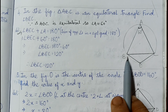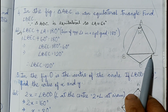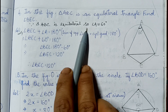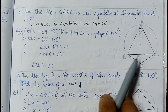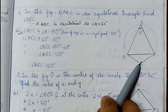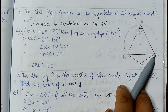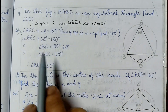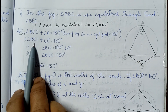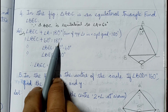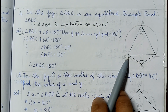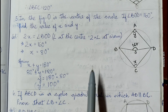Question number four: triangle ABC is an equilateral triangle; find the measure of angle BEC. Since triangle ABC is equilateral, each angle equals 60 degrees, so angle A equals 60 degrees. ABCE is a cyclic quadrilateral, and the sum of opposite angles is 180 degrees, so angle BEC plus angle A equals 180. BEC plus 60 equals 180, therefore angle BEC equals 120 degrees.